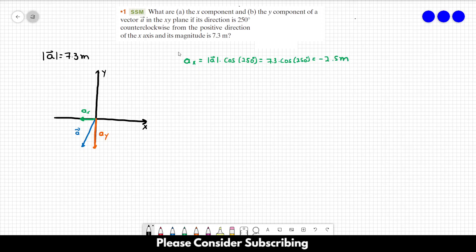For letter B, we want to find out the Y component, and the Y component is the magnitude of the vector times the sine of the angle 250 degrees. And this is 7.3 times the sine of 250 degrees.